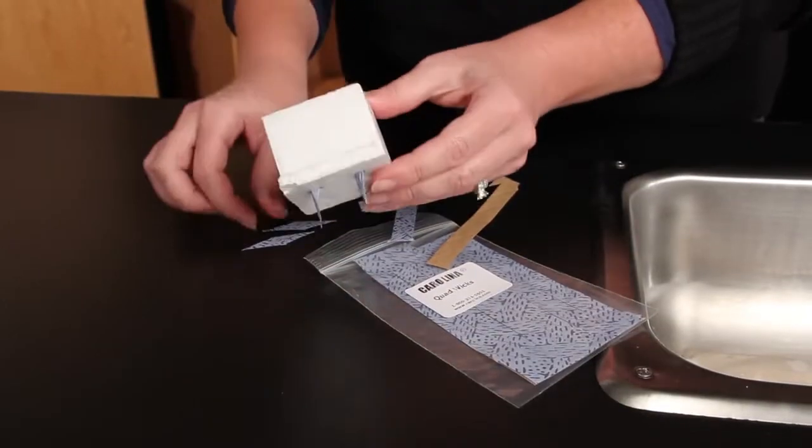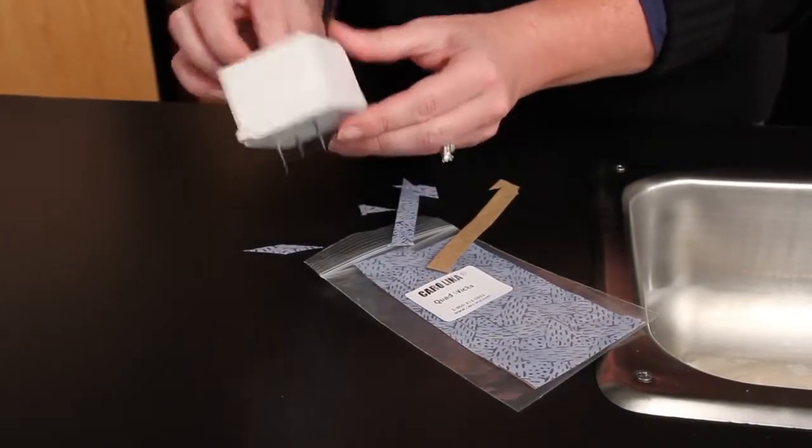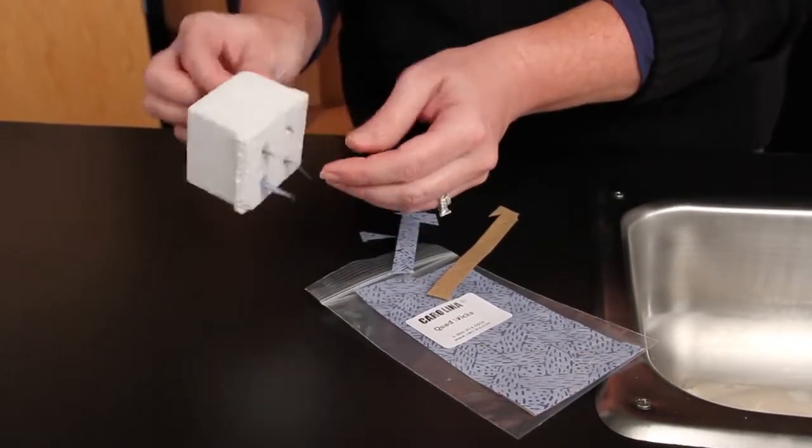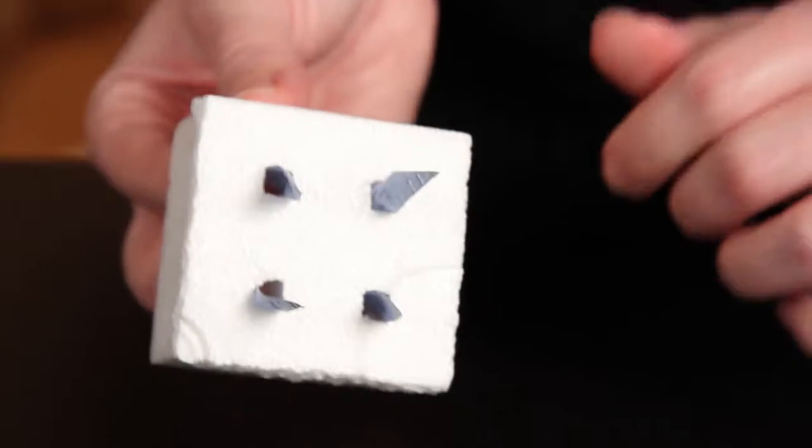Put a paper wick in each of the four cells. Pull the wick through the opening at the bottom of each cell, so the wick extends halfway out, approximately 2 centimeters.